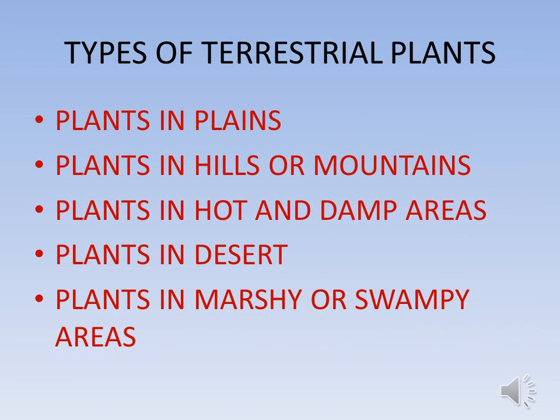Children, in this way we have learned about the types of terrestrial plants: plants growing in plains, plants in hills or mountains, plants in hot and damp areas, plants growing in desert, and plants growing in marshy or swampy areas.